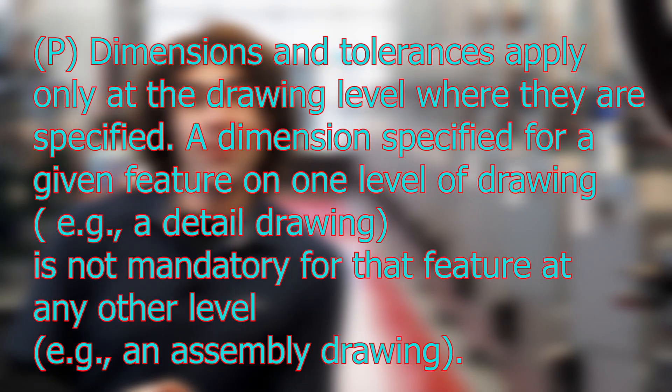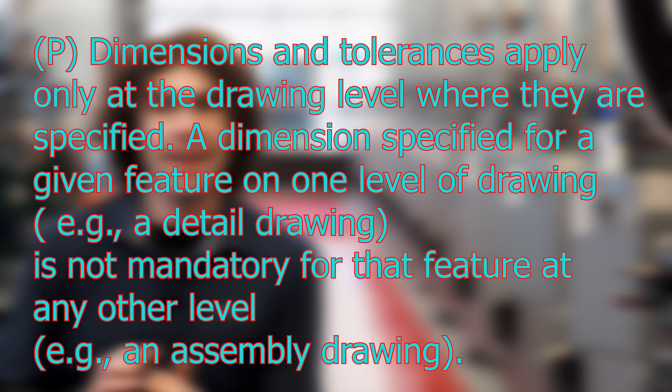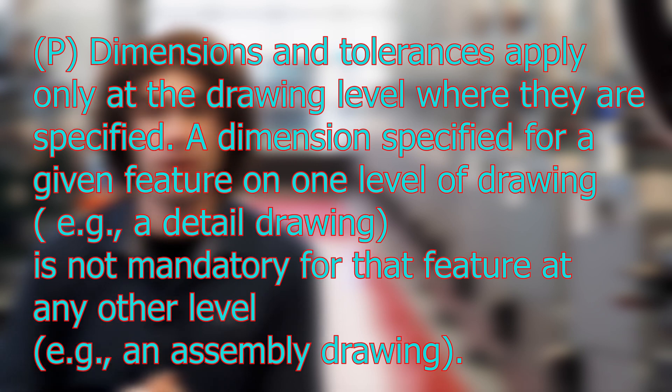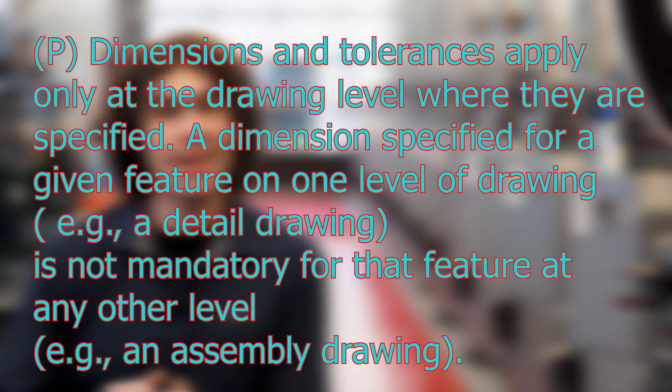Here is the verbatim reading: Dimensions and tolerances apply only at the drawing level where they are specified. A dimension specified for a given feature on one level drawing, e.g. a detail drawing, is not mandatory for that feature at any other level, e.g. an assembly drawing. From my experience looking at drawings, people either don't know this rule exists or don't know what it means. Let me give you some examples of how I've commonly seen drawings made that totally misuse or just ignore this rule.